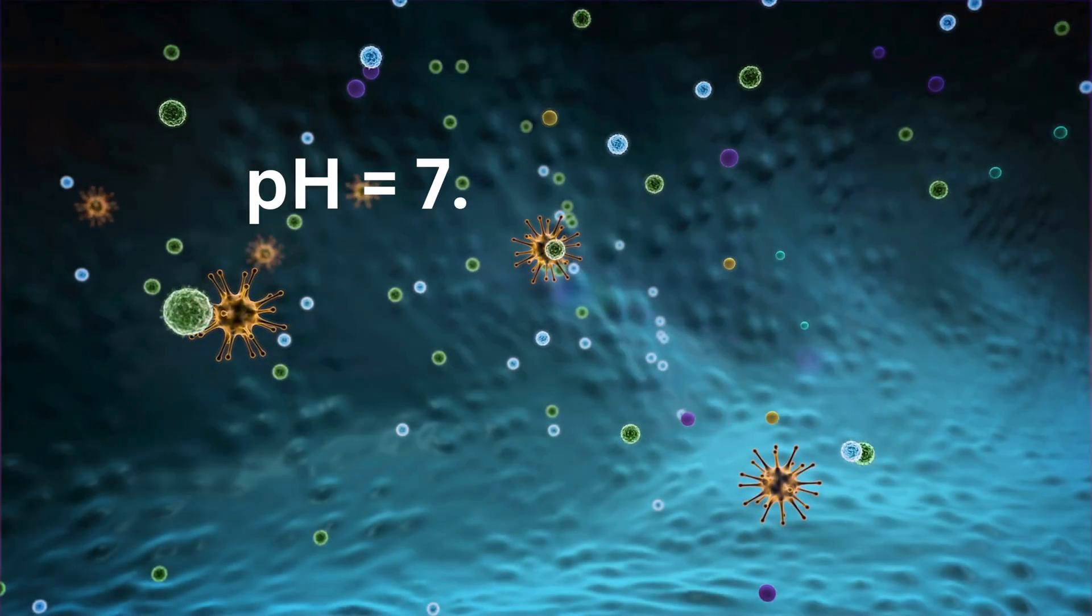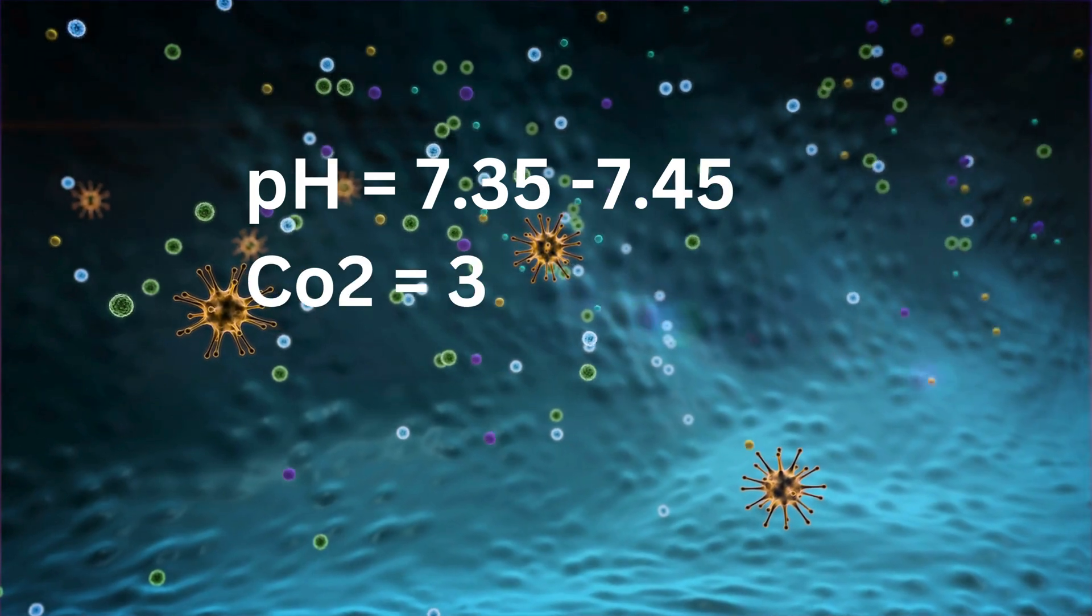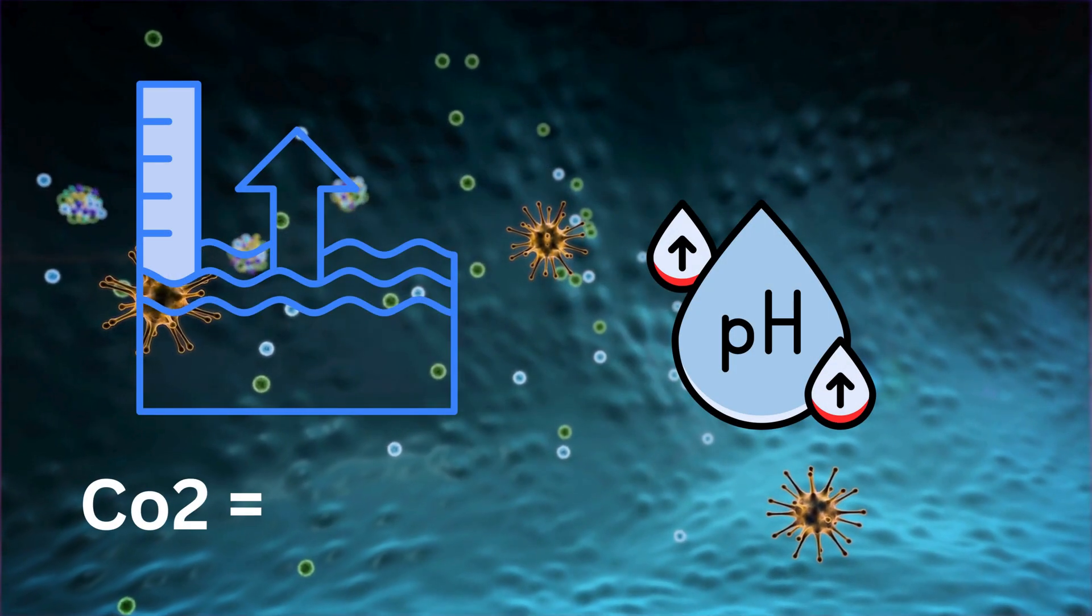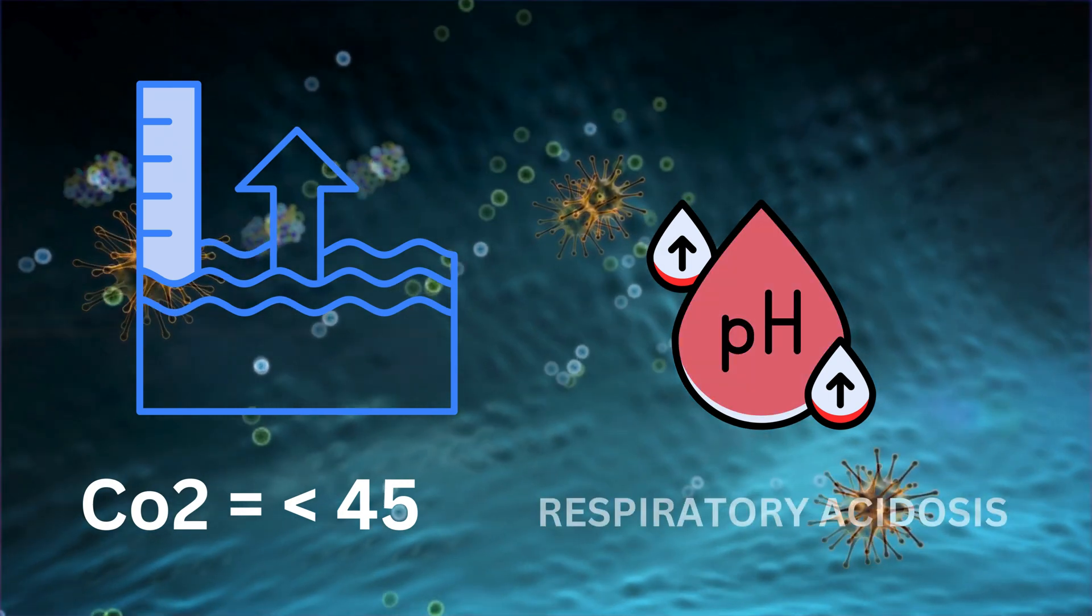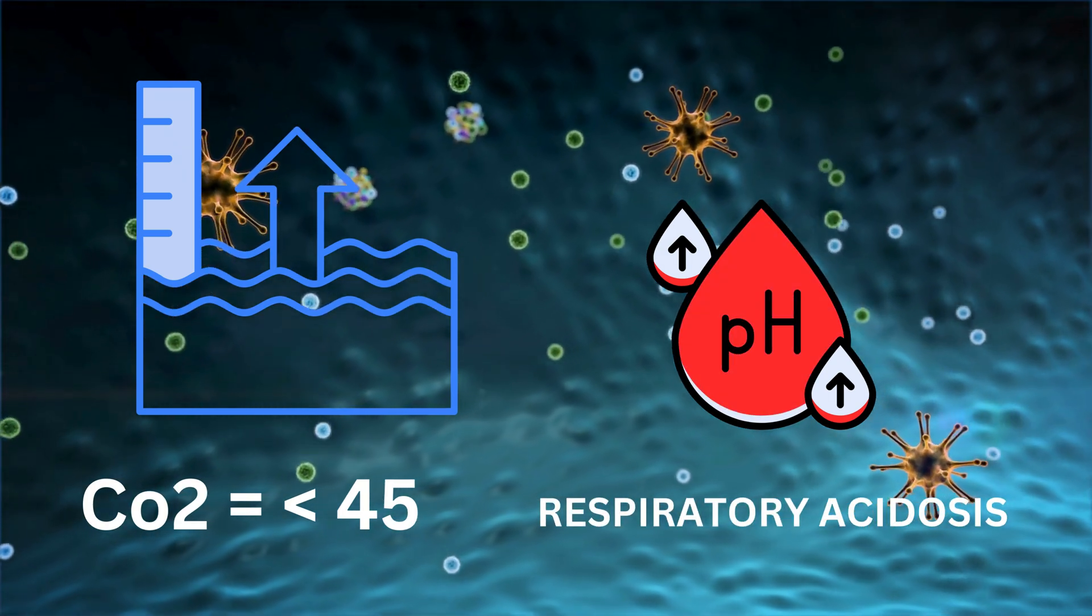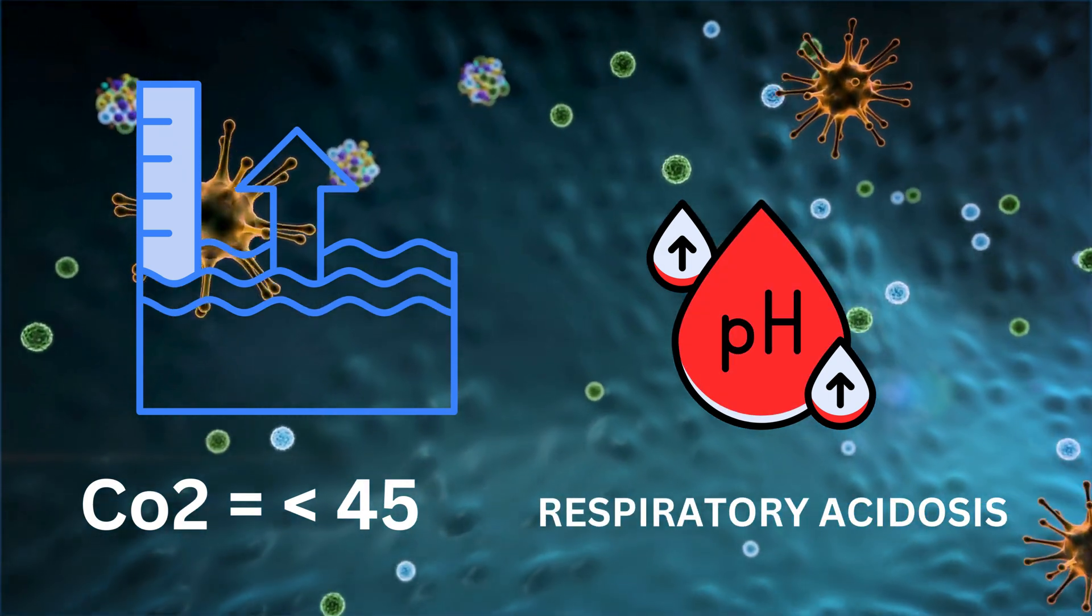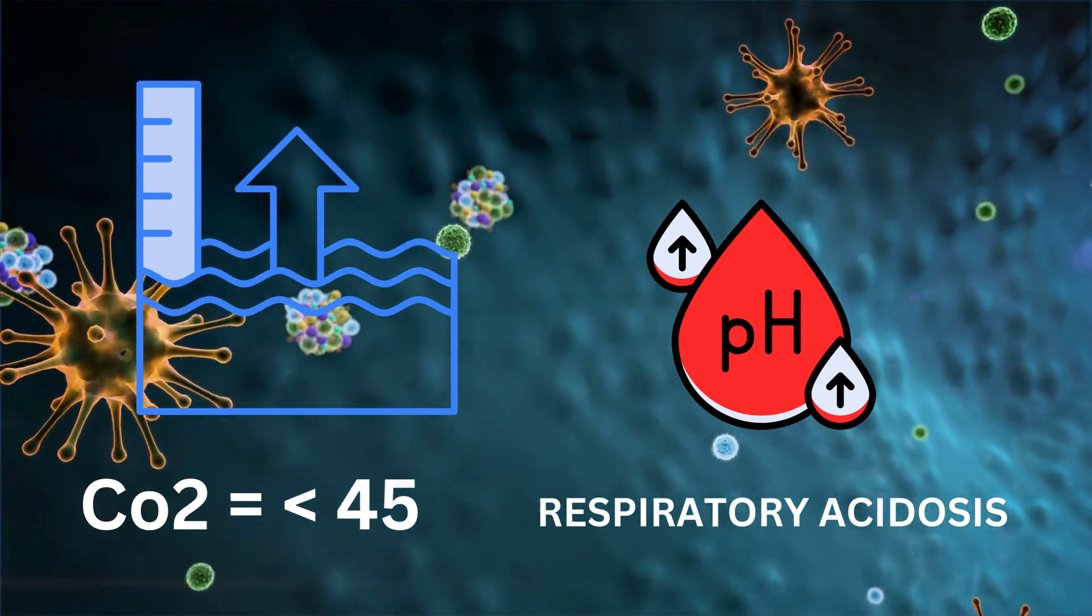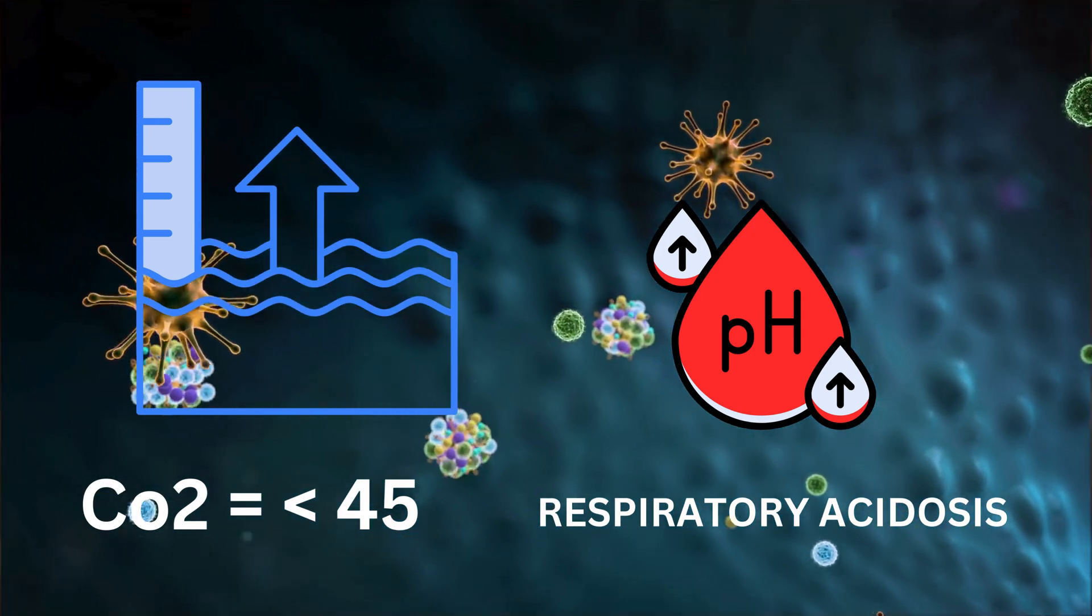Think of it like this. Our bodies operate within a very specific range, a delicate balance of chemicals and processes. When CO2 levels rise, this balance is disrupted, leading to a condition called respiratory acidosis. This means the blood becomes more acidic, and our bodies are incredibly sensitive to even slight shifts in pH.